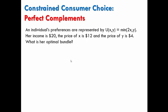Let's say in our example, an individual's preferences are represented by u equals the min of 2x comma y. What this min function means is that for every additional x that the consumer gets, she needs exactly two y's to go with it.